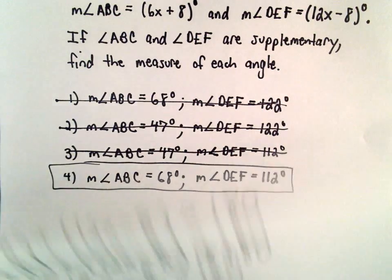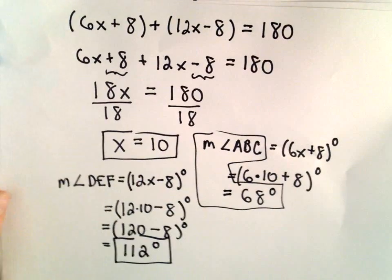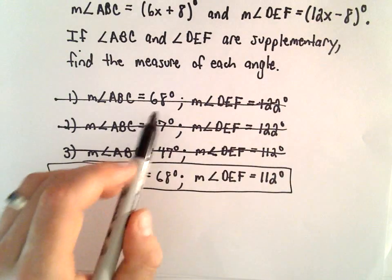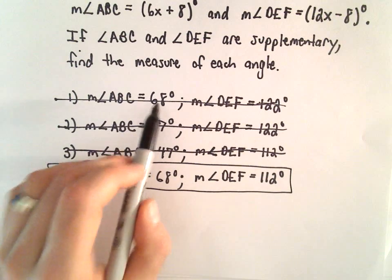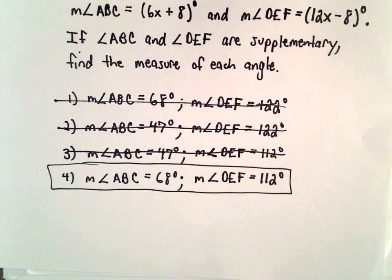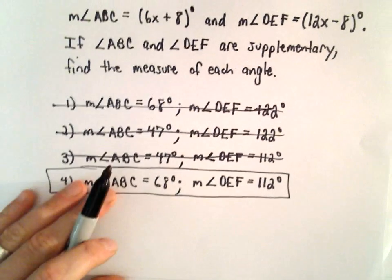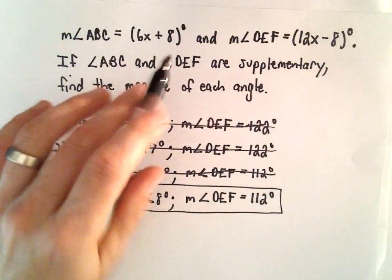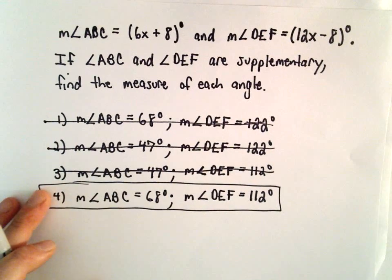But again, you certainly want to do the algebra because we could have certainly had other answer choices. Maybe one was 30 and another was 150 - well, in that case they do add up to 180, but they wouldn't be correct for this particular example.